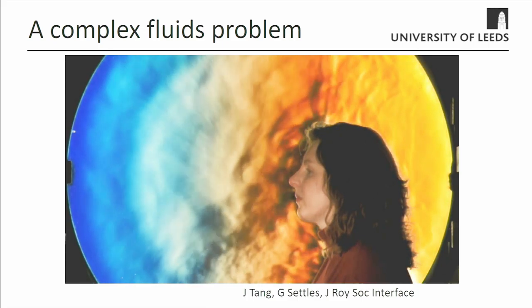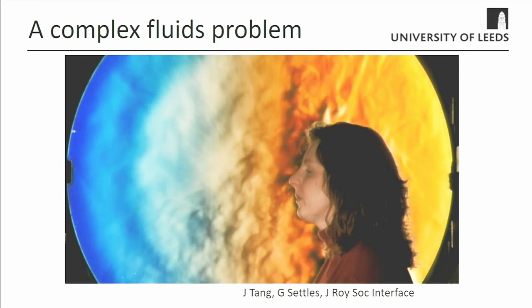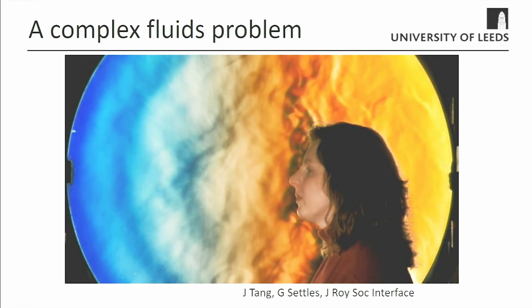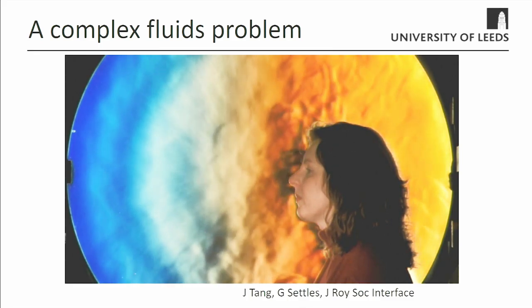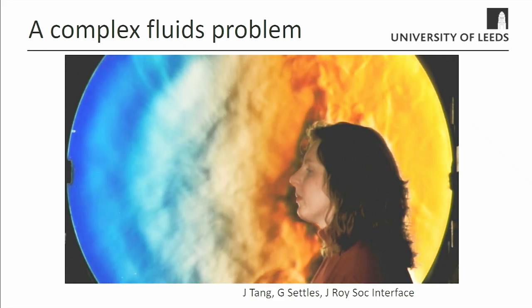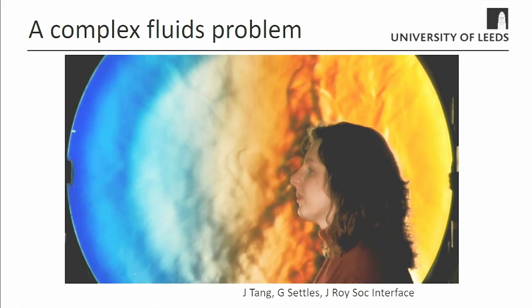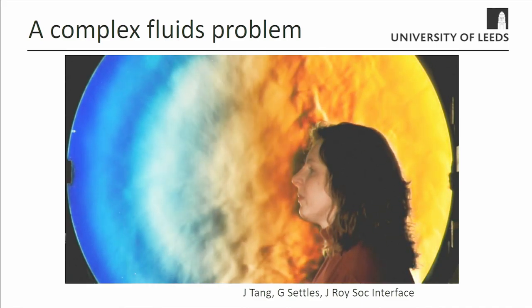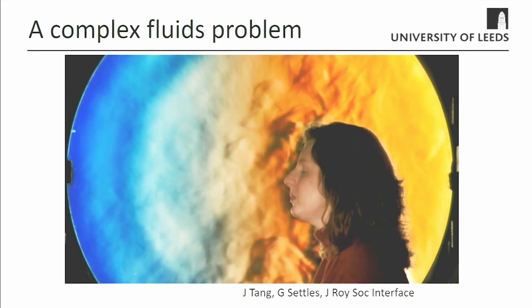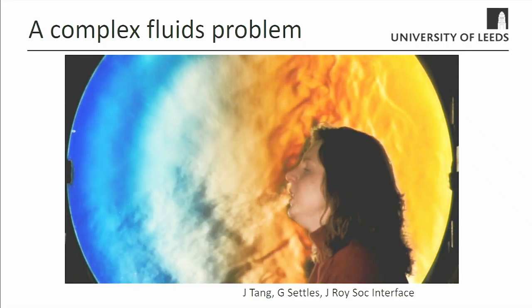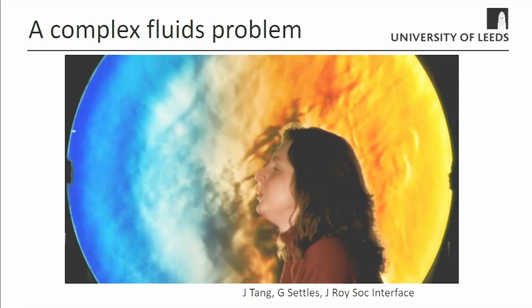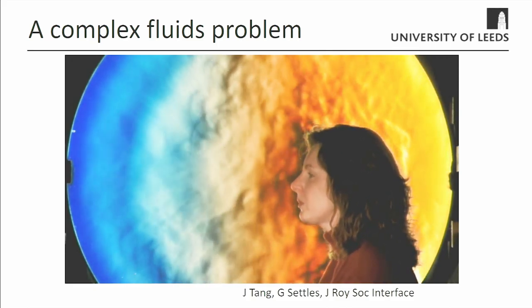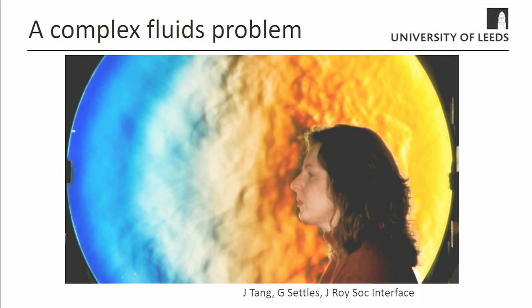I can't take any credit for this video — it was done by Gary Settles at Penn State. It's a lovely video which really shows the complexity of flow around a person. Every single one of you is warmer than the environment you're in, even in Texas, and you have a thermal plume above your head. That's the buoyant convection we've heard about already today. As you watch her breathe, you can see her breathe out of her nose, and then she coughs — that cough penetrates quite a long way and actually penetrates outside what we call the boundary layer flow around her.